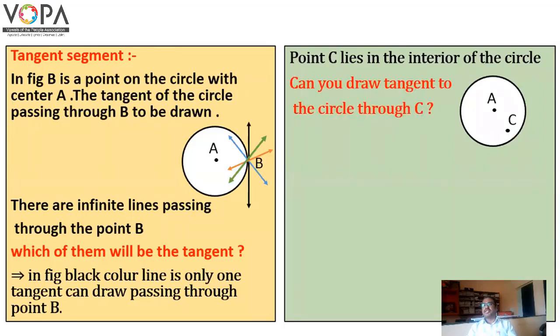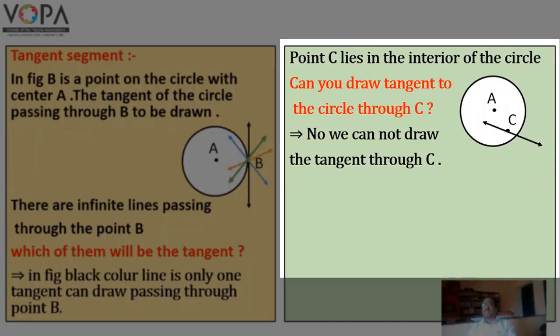Can you draw a tangent to the circle passing through point C? The answer to this question is no. We cannot draw the tangent through C. Point C is not lying on the circle; it is interior of the circle. Therefore, we cannot draw the tangent passing through point C in this figure.